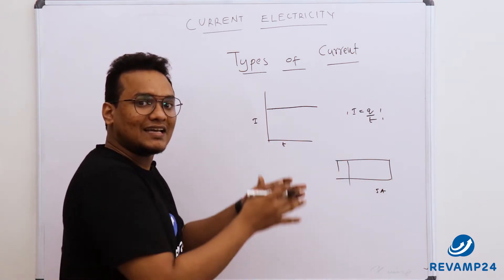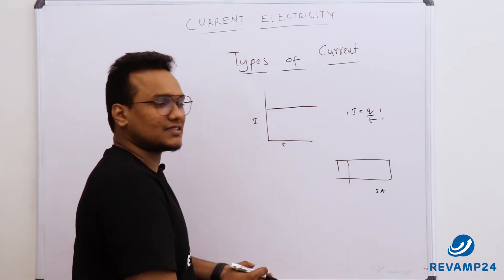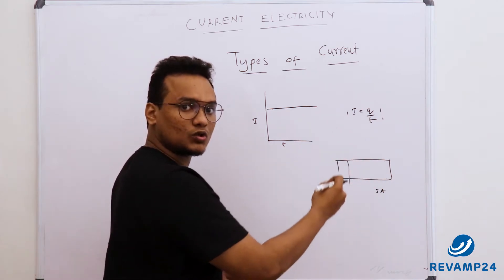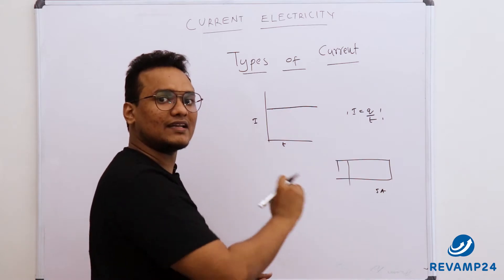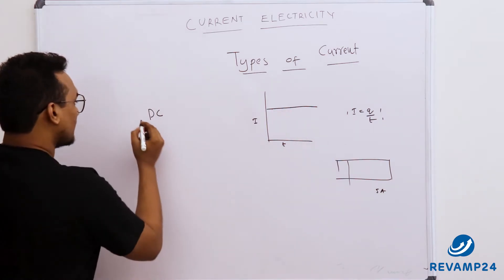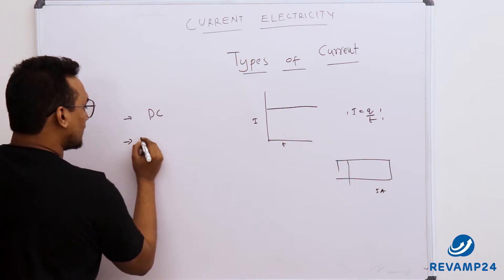Now if this remains same, it means it is the same amount of charges, that is five coulombs, that is passing through a particular cross sectional area over time. If the value of current remains constant, that's DC current.